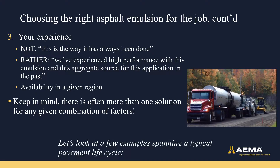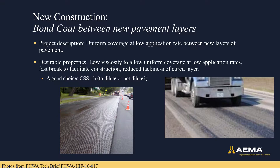Let's put theory to practice and walk through three examples of emulsion selection spanning new construction through rehabilitation. When a new asphalt pavement is constructed, individual layers or lifts are bonded together with asphalt emulsion to ensure that the layers act as a single, uniform, flexible layer. This is called a bond coat or a tack coat. The characteristics we want out of a bond coat are uniform coverage at relatively low application rates, curing to a non-tacky or non-sticky film. Since aggregates aren't a factor here, a good choice might be a stable, low-viscosity product made with a harder or stiffer base asphalt to resist tracking — something like CSS 1H. That's cationic, slow-set, low-viscosity, hard penetration. The other advantage to a stable system like CSS 1H is that it can be diluted with water to help achieve more uniform coverage, as shown in the graphic on the left.